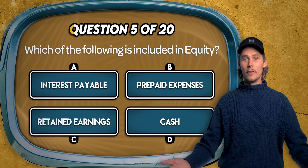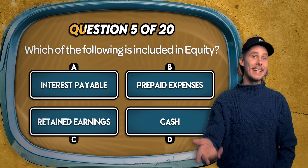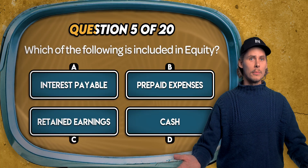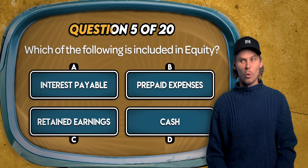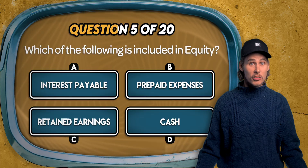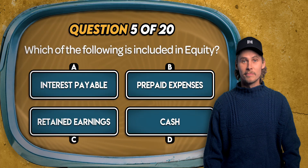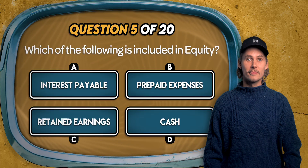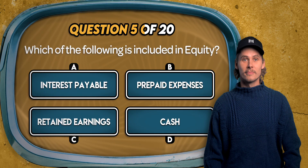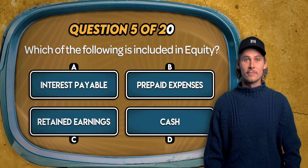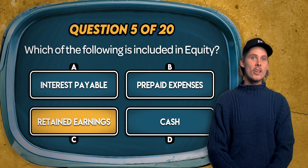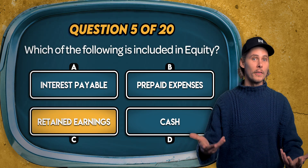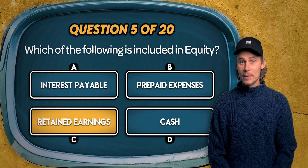Question 5. Which of the following is included in equity? Interest payable, prepaid expenses, retained earnings, or cash? It's C: retained earnings represent accumulated profits kept in the business.